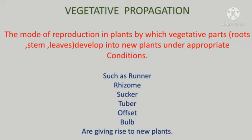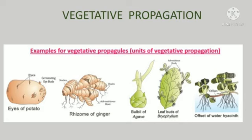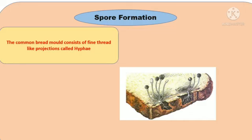Vegetative propagation: the mode of reproduction in plants by which vegetative parts — roots, stem, and leaves — develop into new plants under appropriate conditions. Such as runner, rhizome, sucker, tuber, offset, and bulb are giving rise to a new plant.